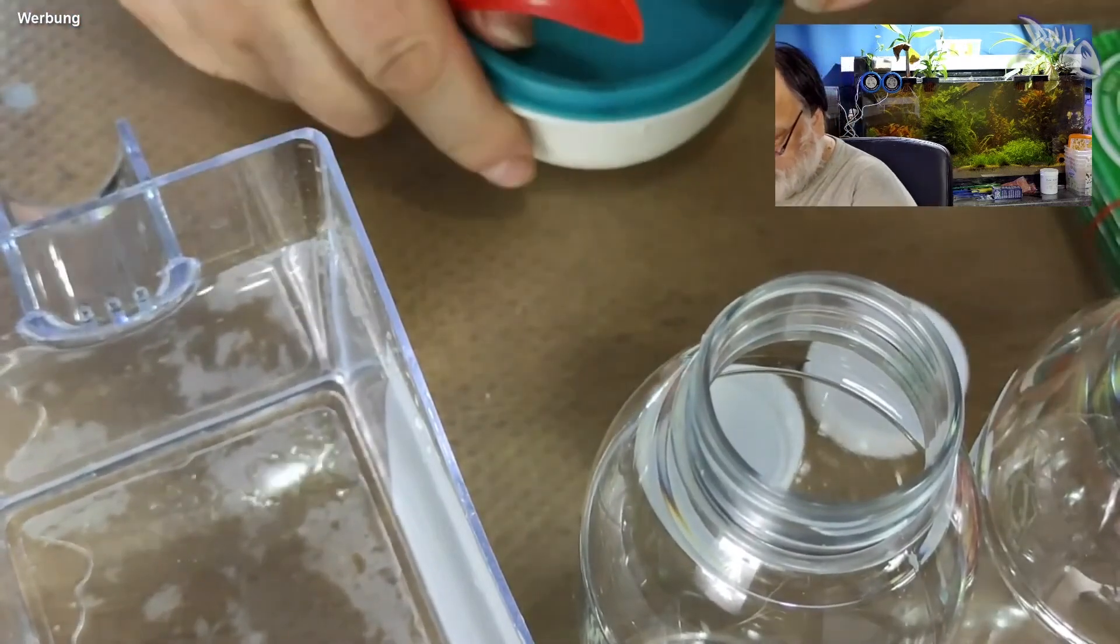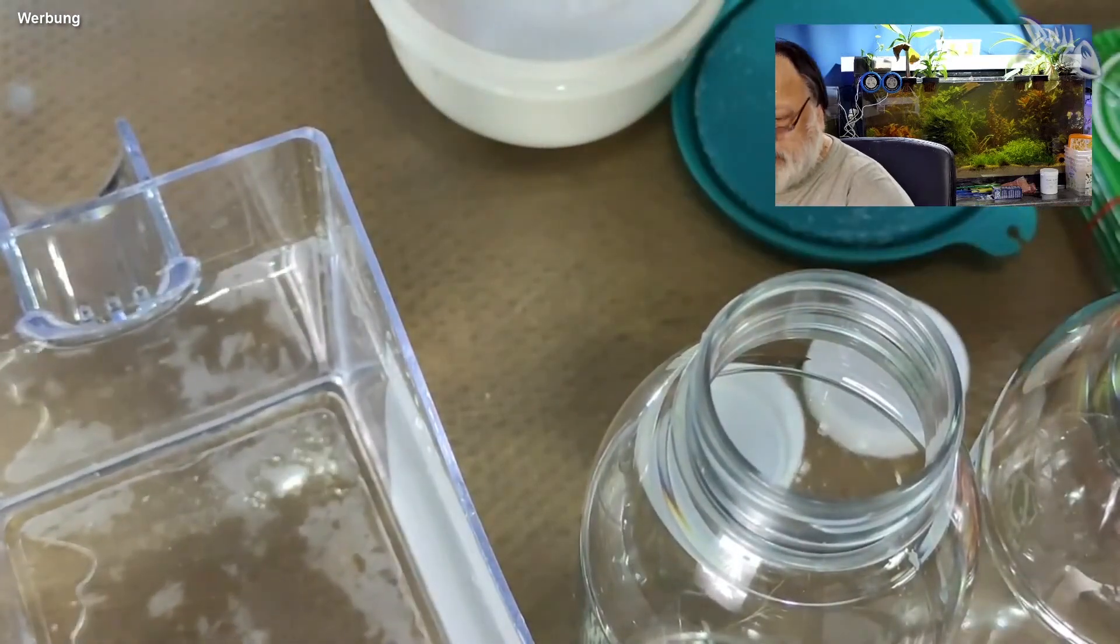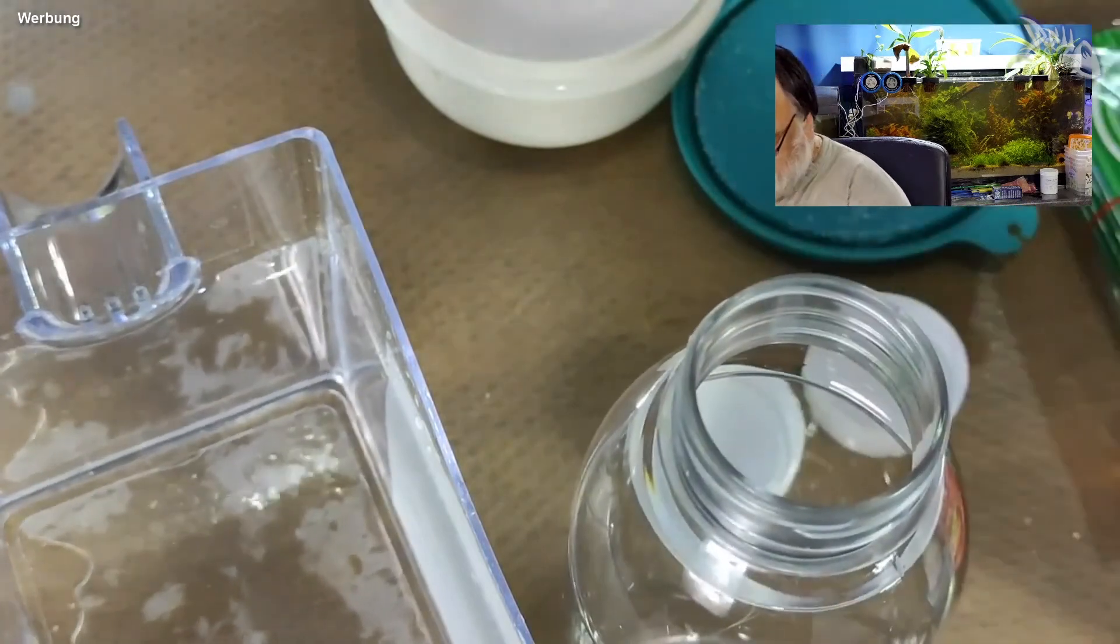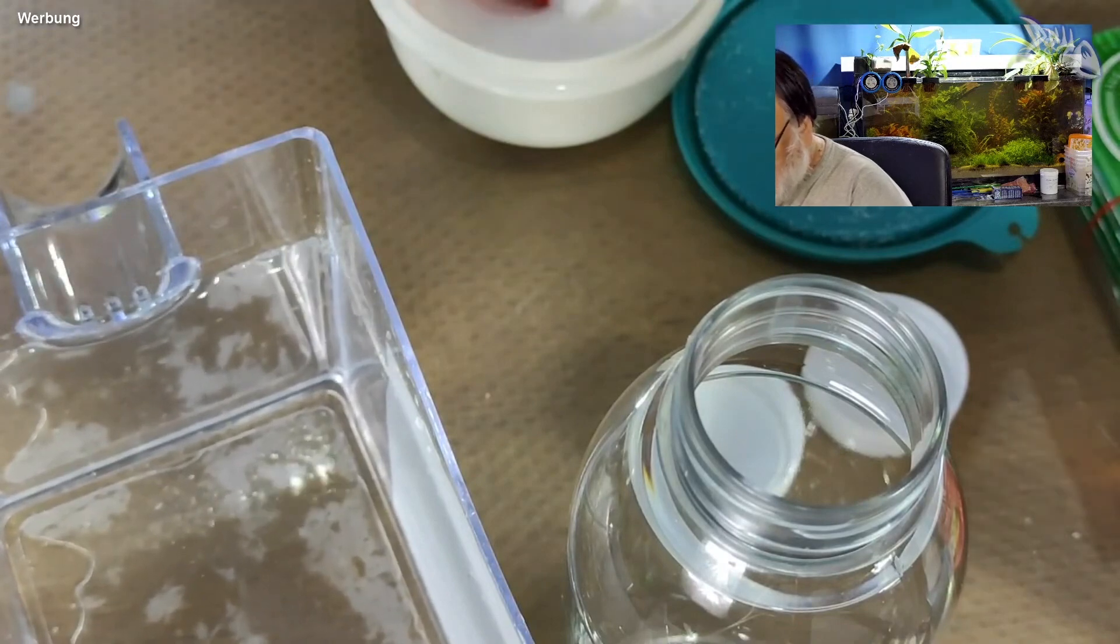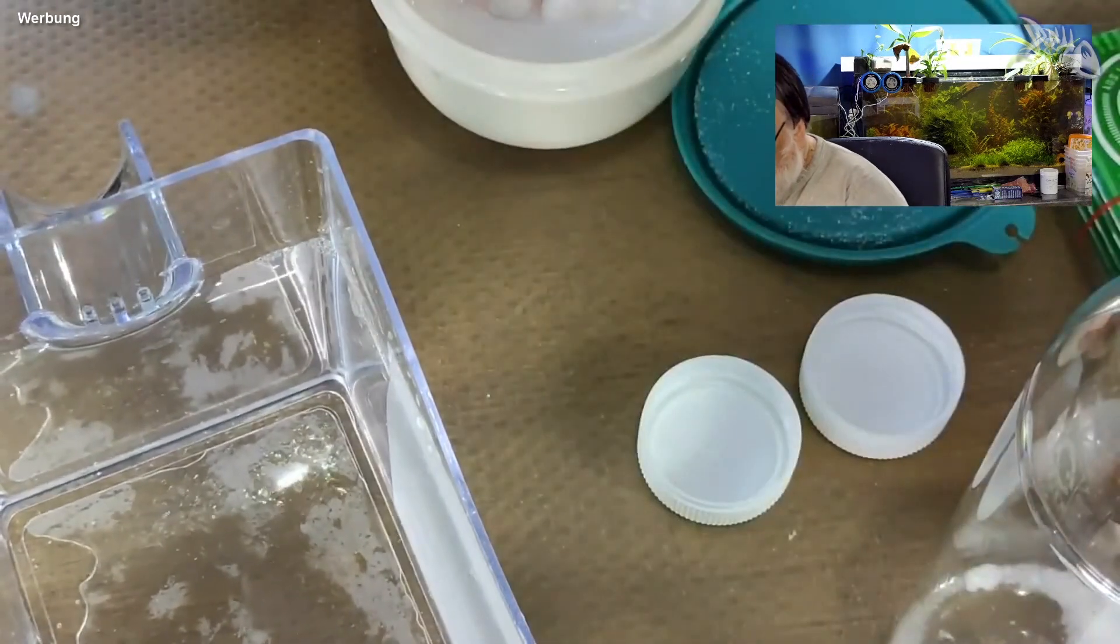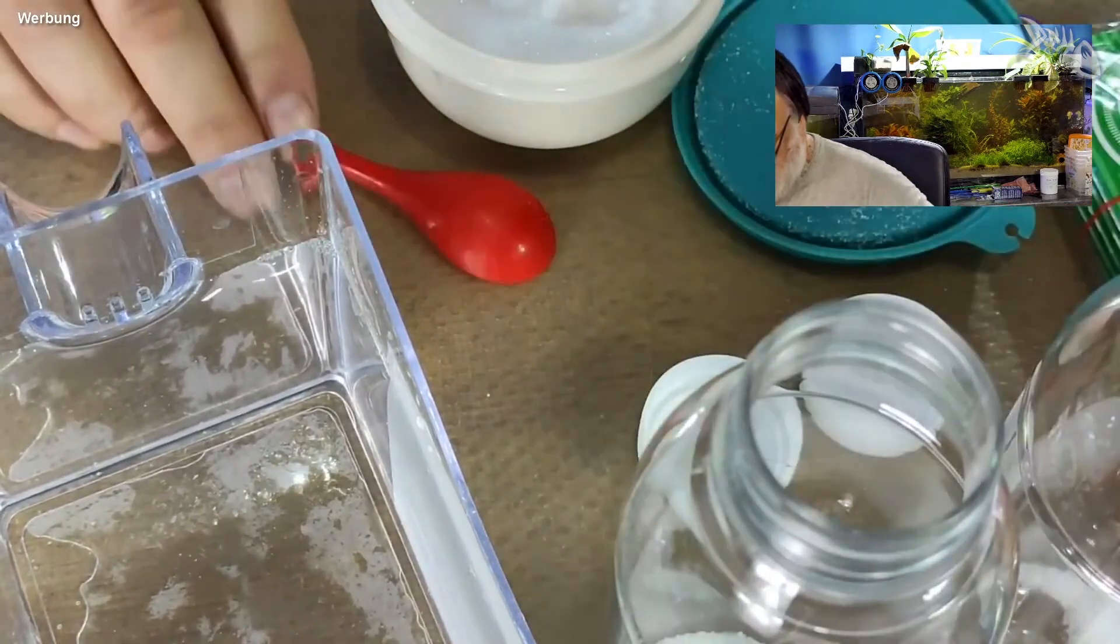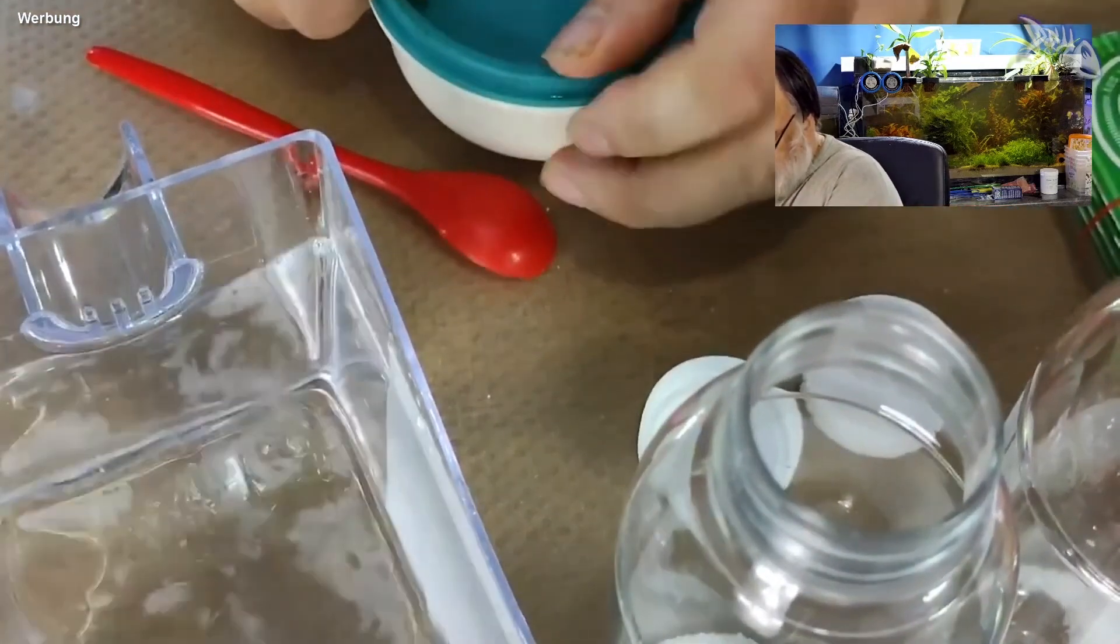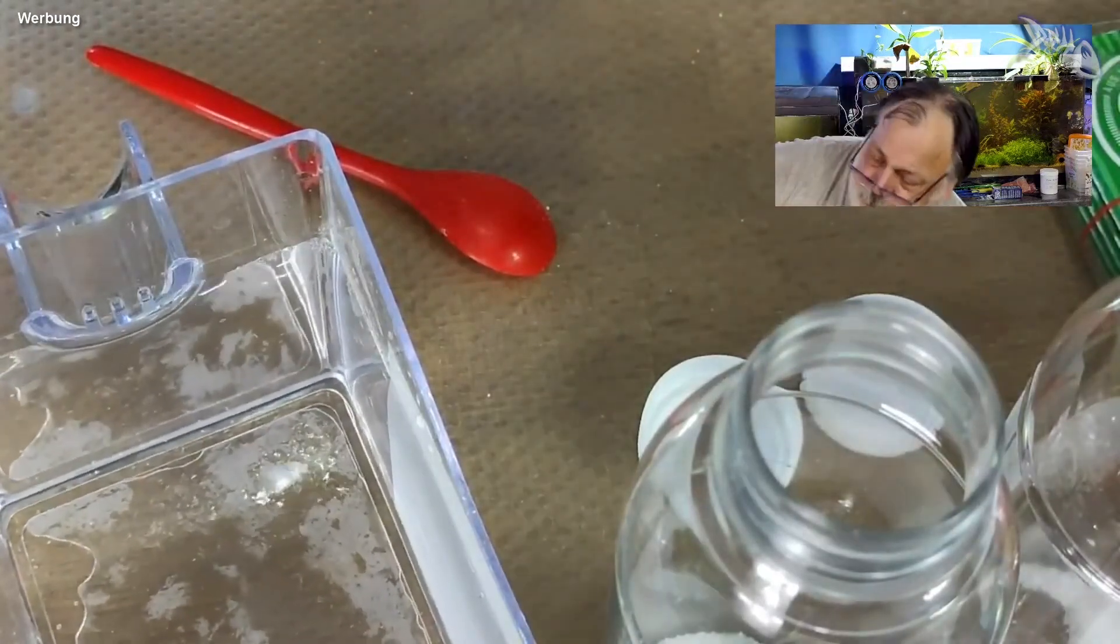Ich mache jetzt aus dem Ansatz zwei Flaschen. Dafür gebe ich in jede Flasche einen Teelöffel Zucker. Wieder schön verschließen. Können wir schon mal an die Seite stellen.